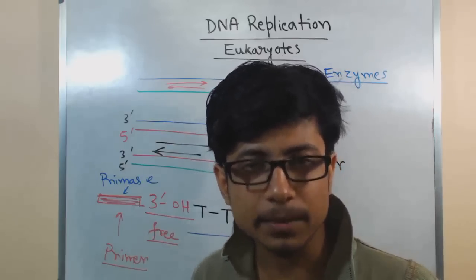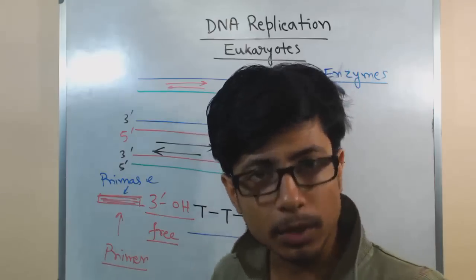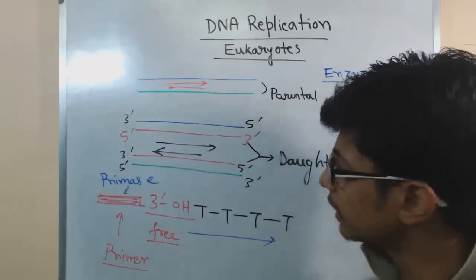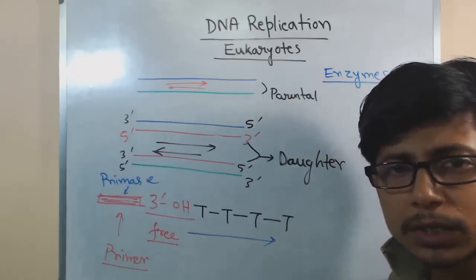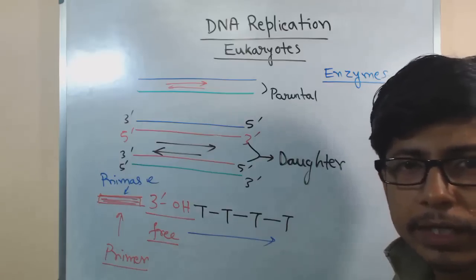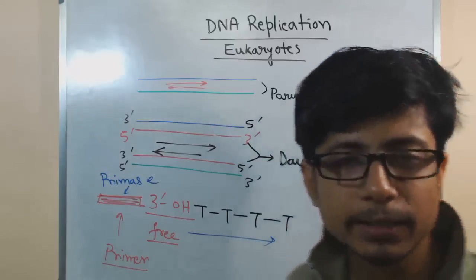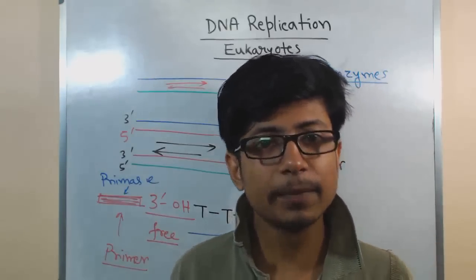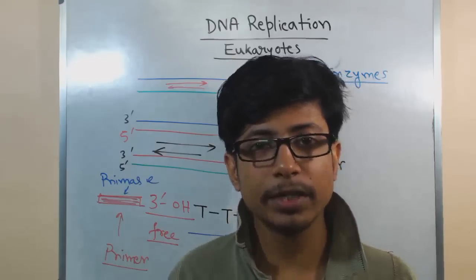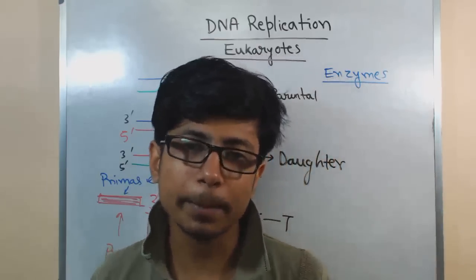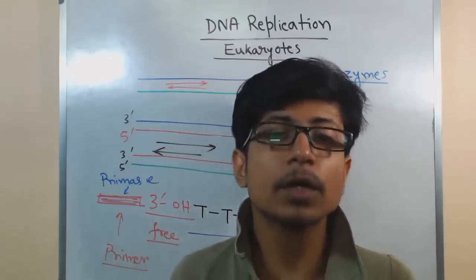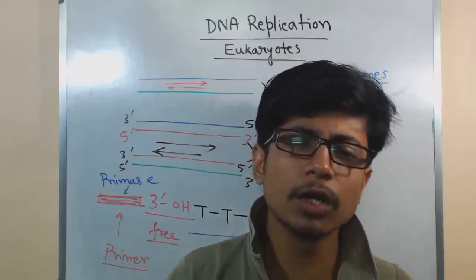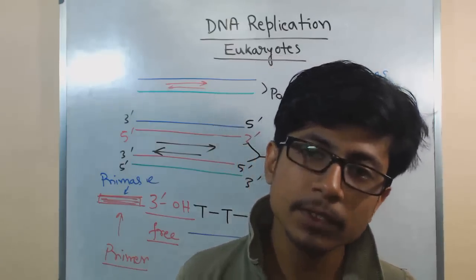Multiple primers are required in lagging strand synthesis, and only small fragments of nucleotide sequence are synthesized at a time — these are called Okazaki fragments, named after the discoverer. Okazaki fragments are very small in prokaryotes, about 20 to 30 base pairs. On the other hand, in eukaryotes, Okazaki fragments are larger — about 200 to 400 base pairs long — because eukaryotic genes are larger and they need to polymerize a lot more DNA compared with prokaryotes.